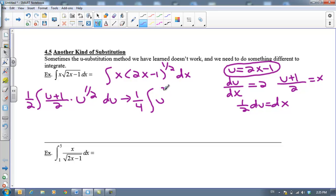And then I'm going to distribute my u plus 1 times my u to the 1/2. So I'm going to get u to the 3/2. Now how do we get that? Now I've got u to the 1 times u to the 1/2. You just add those exponents. So that's what u times u to the 1/2 is. And then plus u to the 1/2 du. And so now I've got it in a form that I can integrate. So let's go ahead and do that.